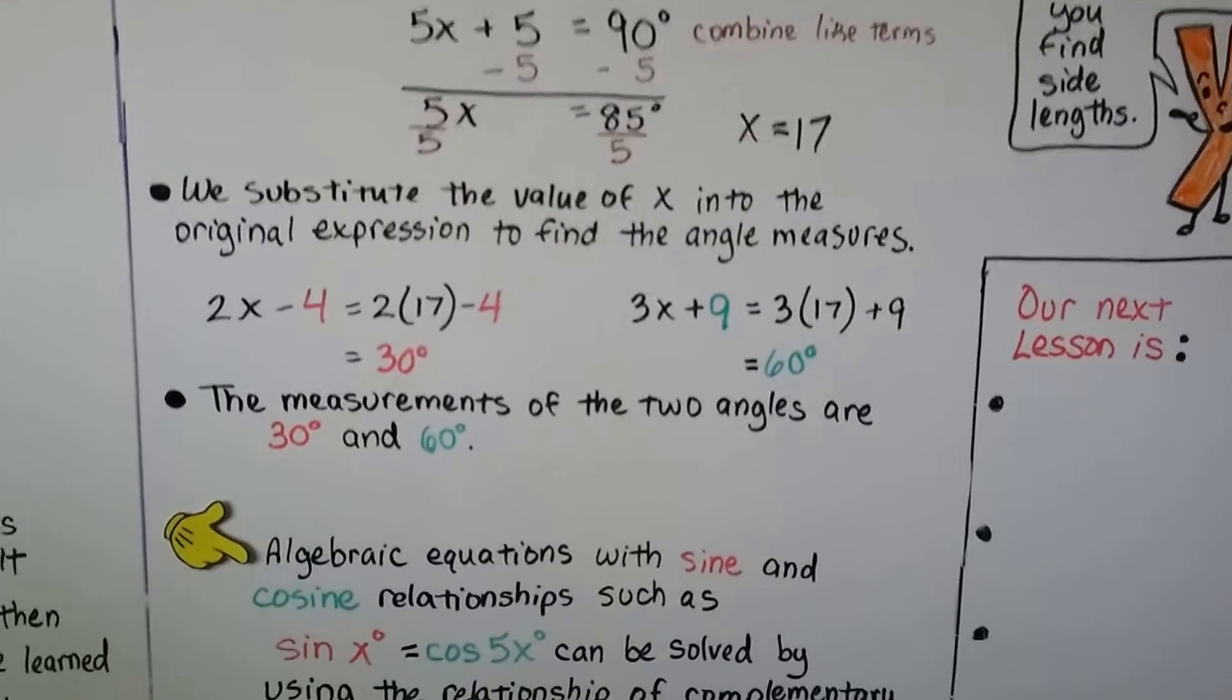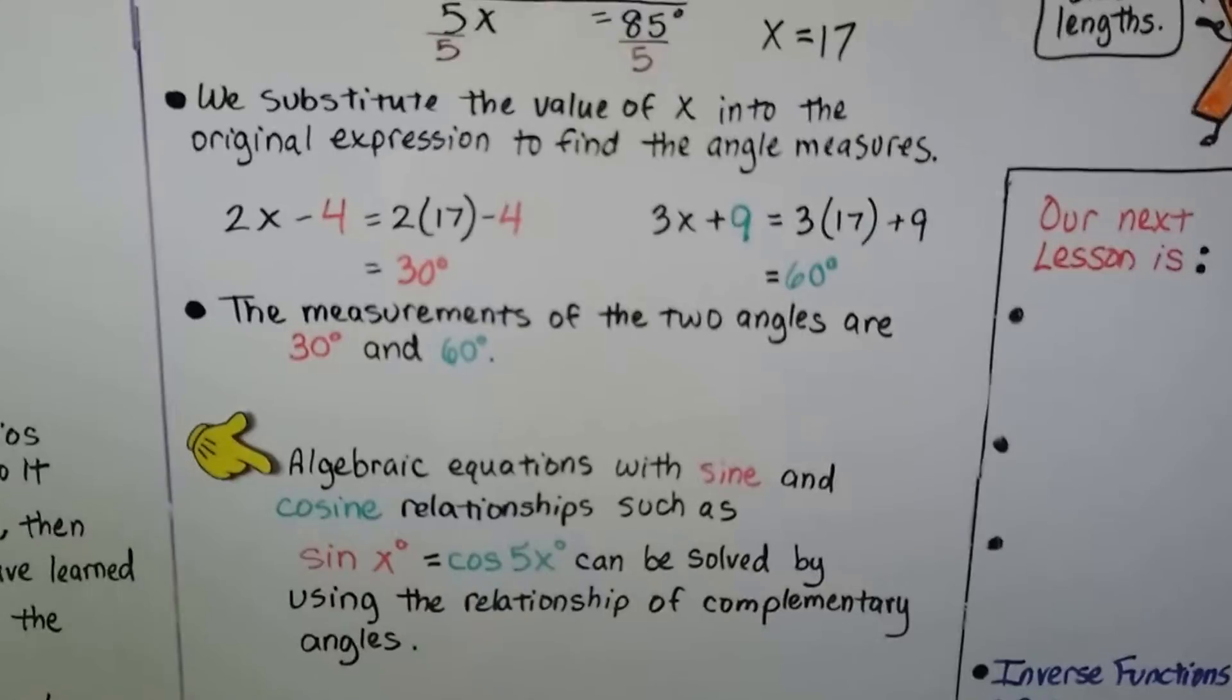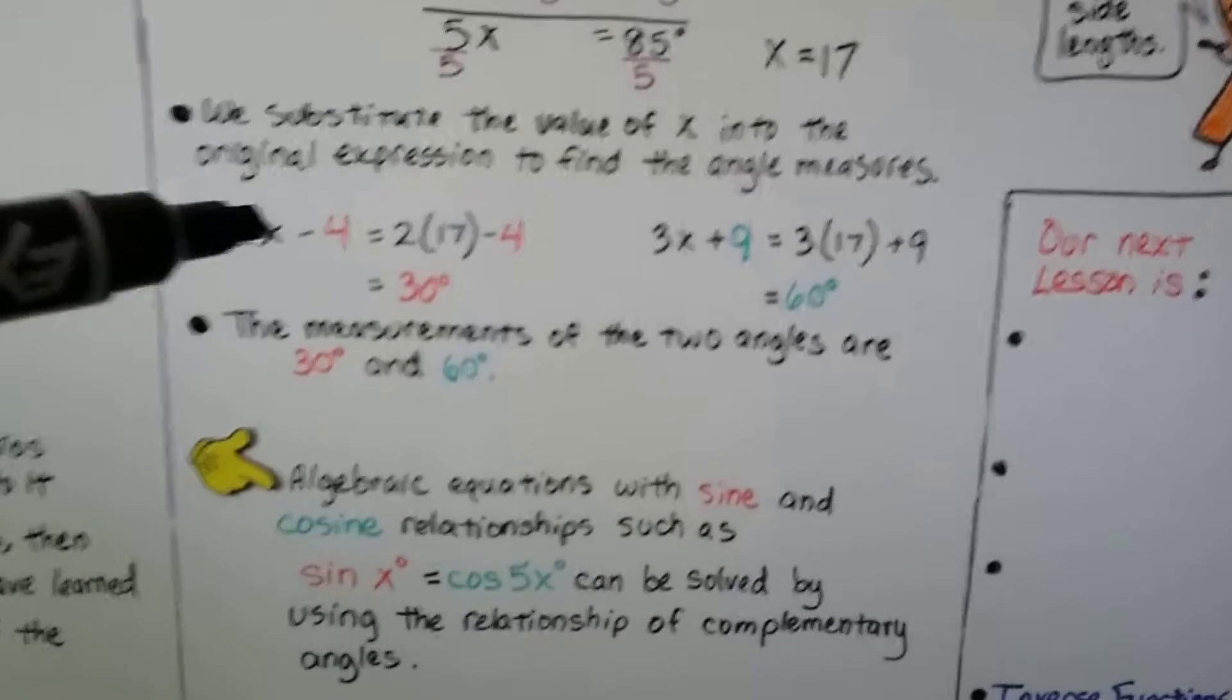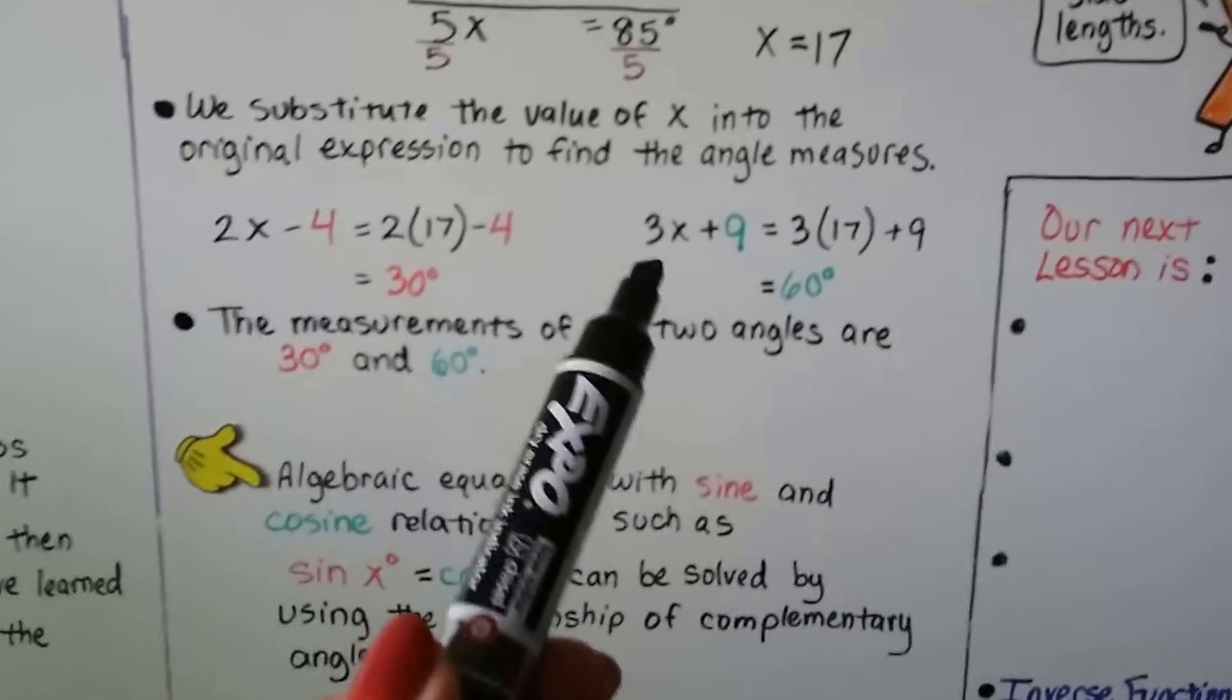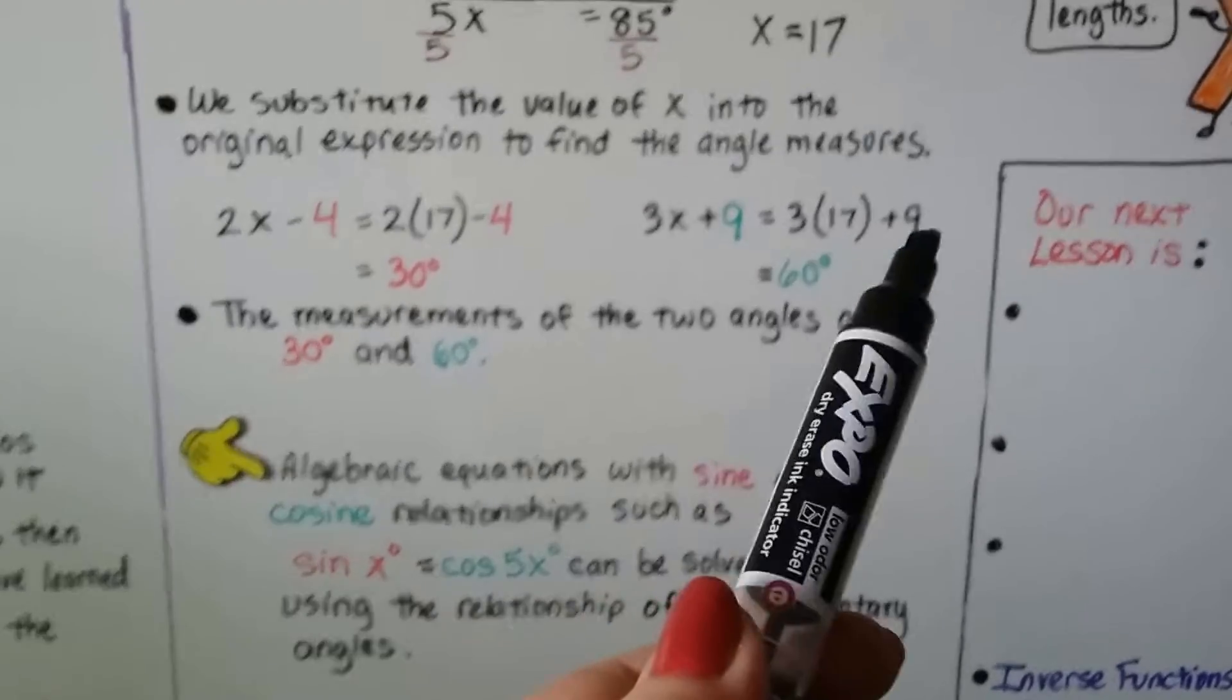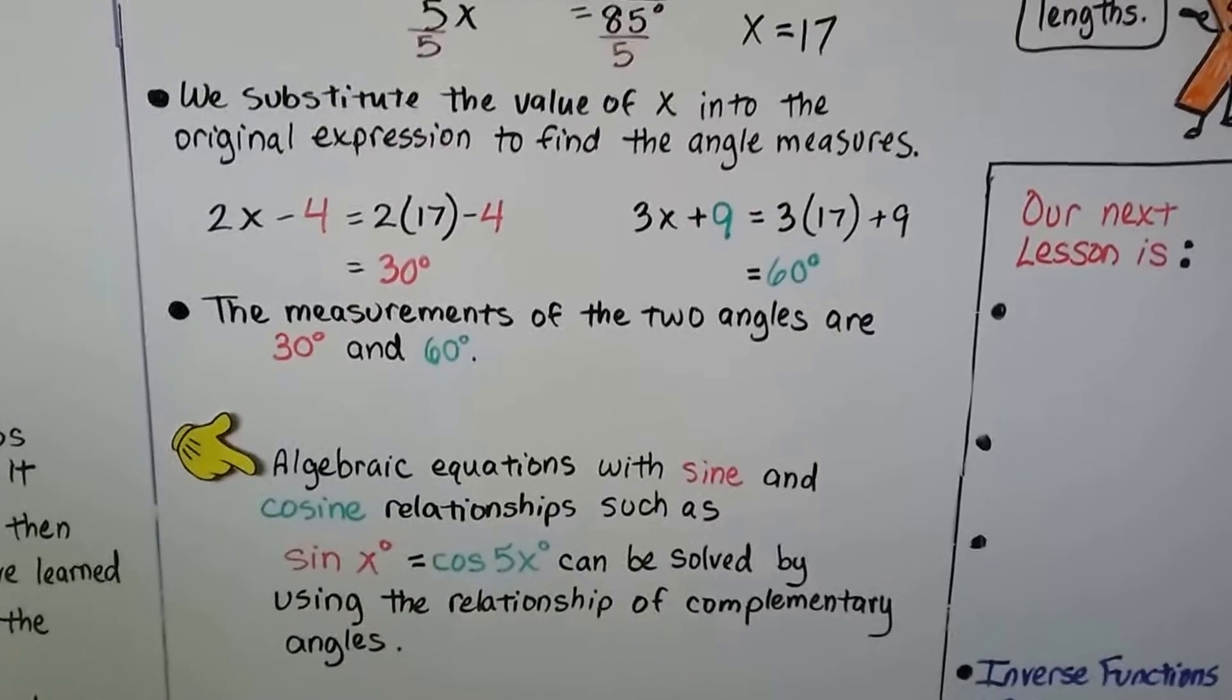Well, now that we know x is equal to 17, we can substitute that value into the original expression to find the angle measures. So we had 2x minus 4, that's 2 times 17 minus 4, that's 30 degrees. And 3x plus 9 is 3 times 17 plus 9, that's 60 degrees. So now we have the measures of the two angles.